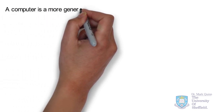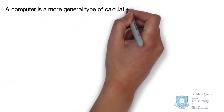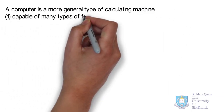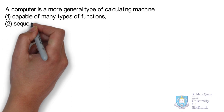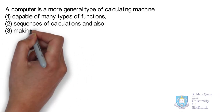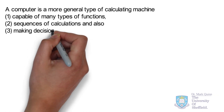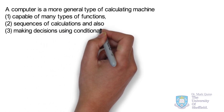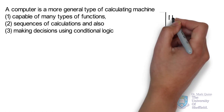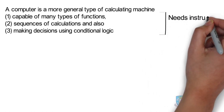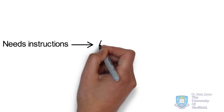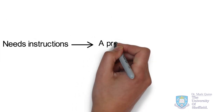A computer in the modern sense is a more general type of calculating machine designed and capable of many types of mathematical functions and even sequences of calculations. A typical modern computer can also make decisions using simple logic. Such a general computing machine requires instructions.